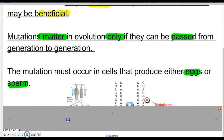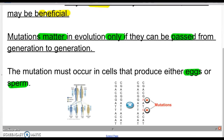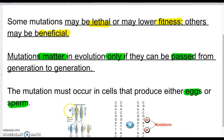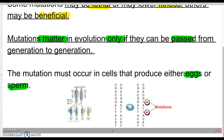It's important to remember that the mutations we focus on are the inheritable ones, meaning the mutation must have been in the egg or the sperm that made the new organism, so that the offspring inherits the mutation. Their descendants also have that mutation or the potential to have it as well.